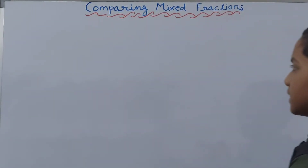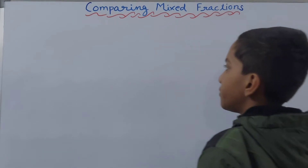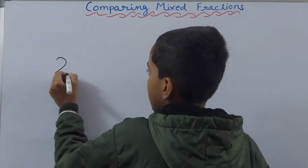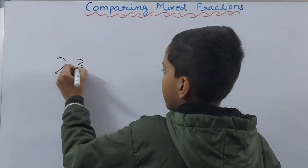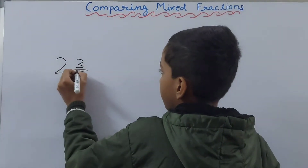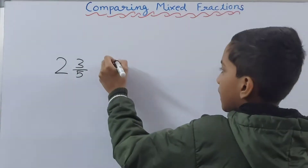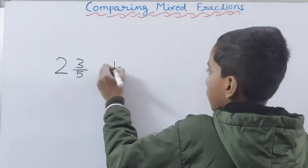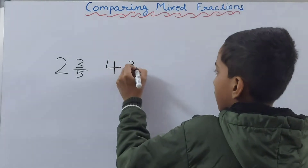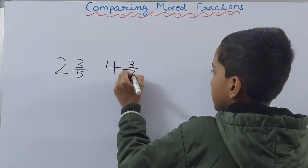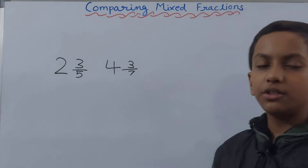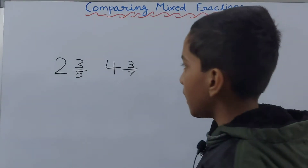First, let's take two mixed fractions. Let's take two whole and three upon five, and let's take four whole and three upon seven. These two are the fractions which we need to compare.